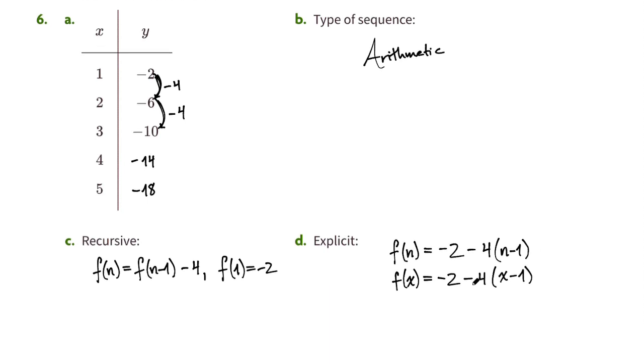And then if you'd like to take that minus 4 and distribute it, you can do that as well. The negative 4 times the x is negative 4x, and negative 4 times negative 1 is plus 4. And then we can combine that with the negative 2, so we end up with negative 4x, and then positive 4 minus 2 is positive 2.